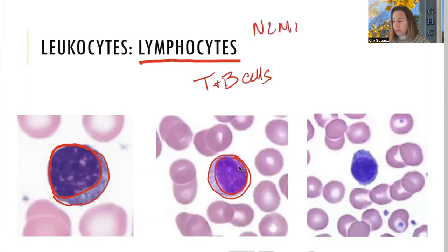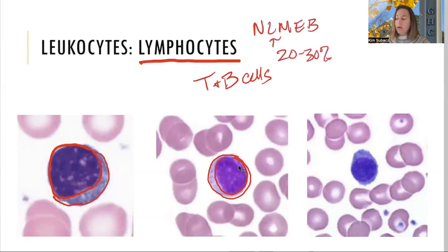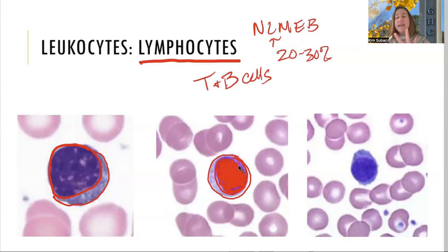To identify lymphocytes on sight: look for that big nucleus in the center — it gives it away. Their job is to produce T and B cells. As far as numbers, lymphocytes make up about 20 to 30 percent of all white blood cells.